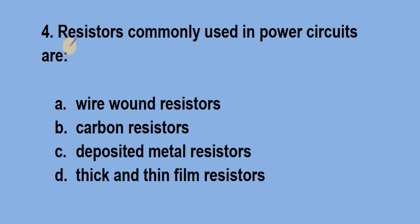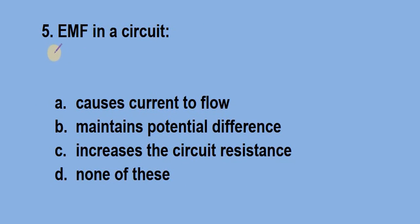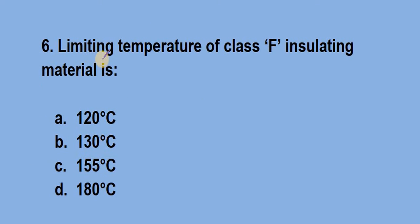Question number 4, resistors commonly used in power circuits are? Answer is option A, wire wound resistors. Question number 5, EMF in a circuit. Answer is option B, maintenance potential difference. Question number 6, limiting temperature of class F insulating material is? Answer is option C, 155 degree Celsius.